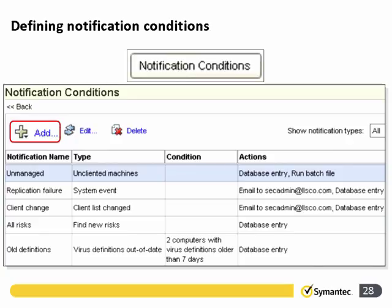Looking at the old definitions notification type, we can set conditions that trigger it — for example, if two computers have virus definitions older than seven days, that sparks the notification to add a database entry. We can use the tasks at the top to add, edit, or delete notifications.